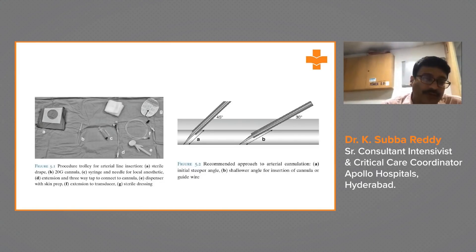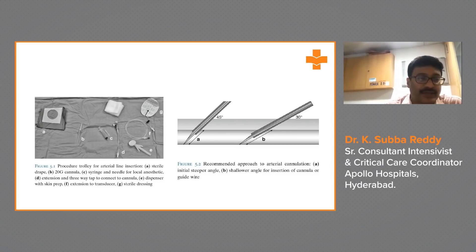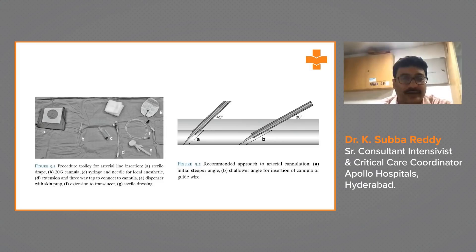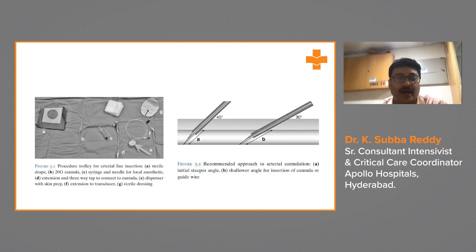The equipment required includes a 20-gauge cannula, syringe and needle for local anesthetic, extension set, three-way tap, skin preparation, extension to transducer, and sterile dressing. The recommended approach for arterial cannulation is an initial steeper angle followed by a shallower angle for insertion of the cannula, or the guidewire method, which is the preferred and recommended approach for keeping the arterial line.